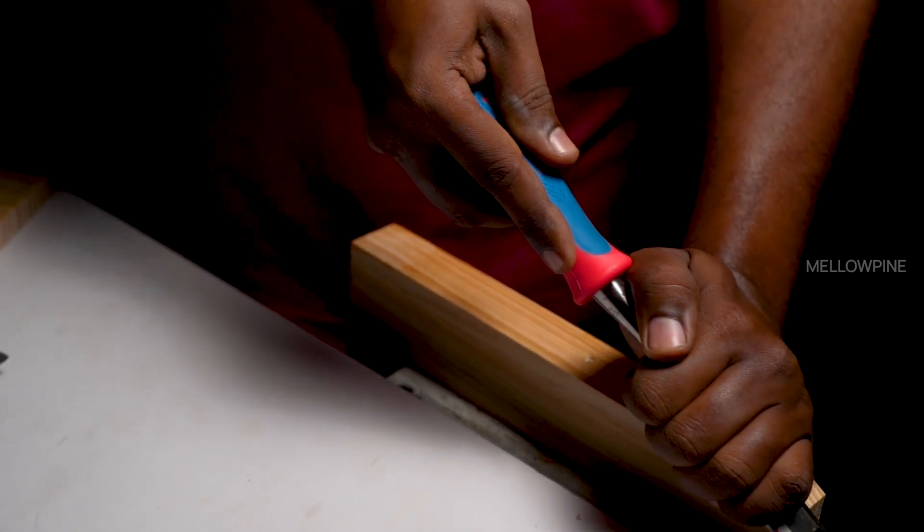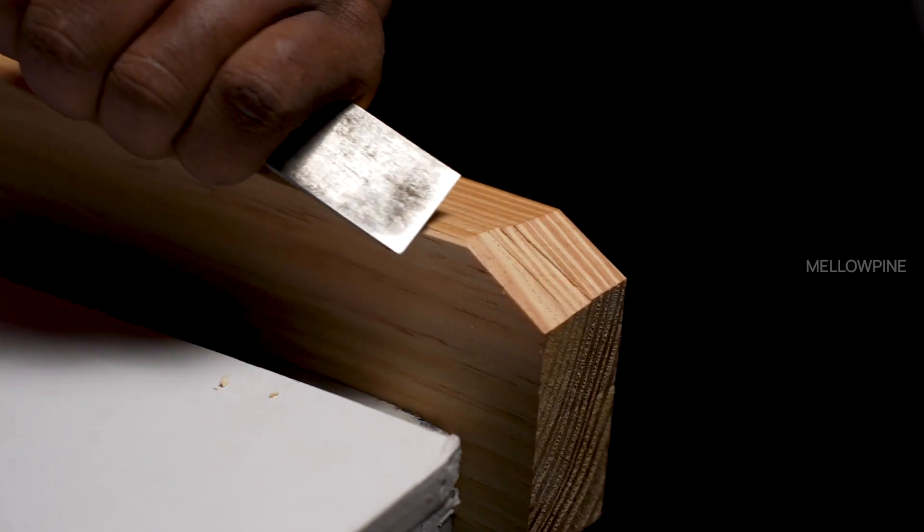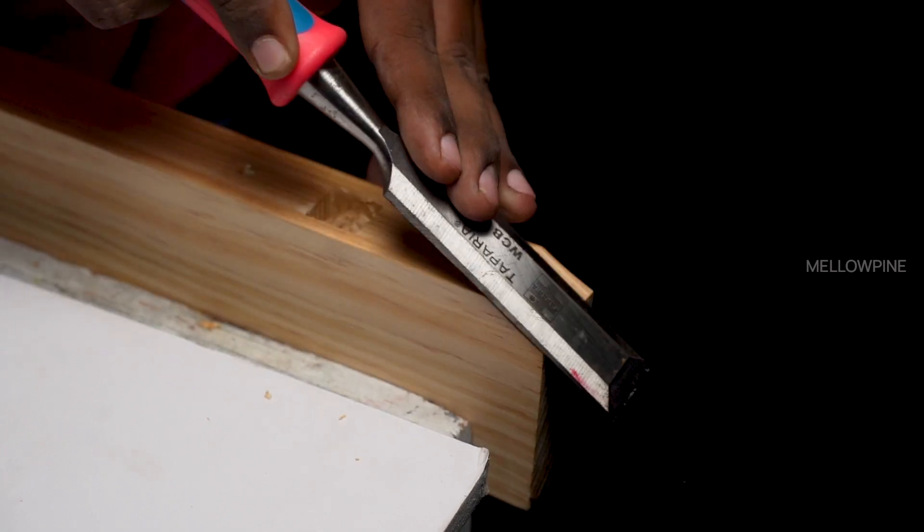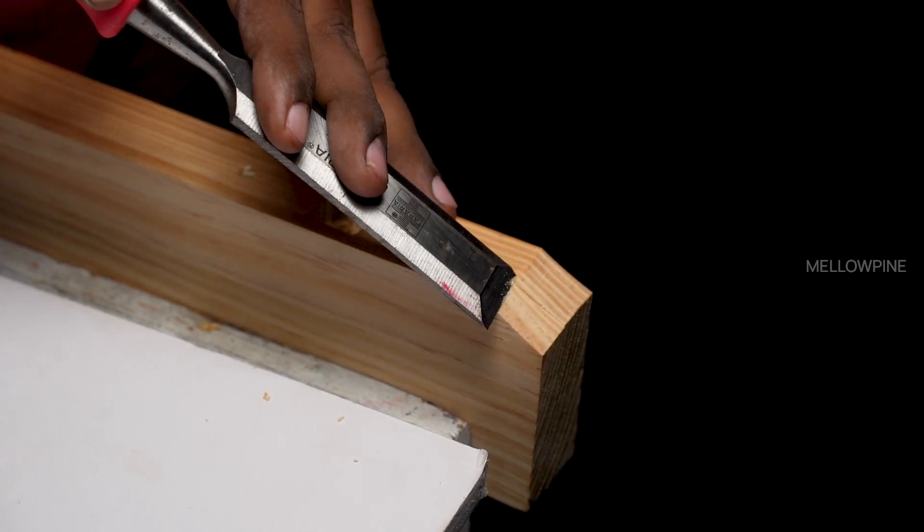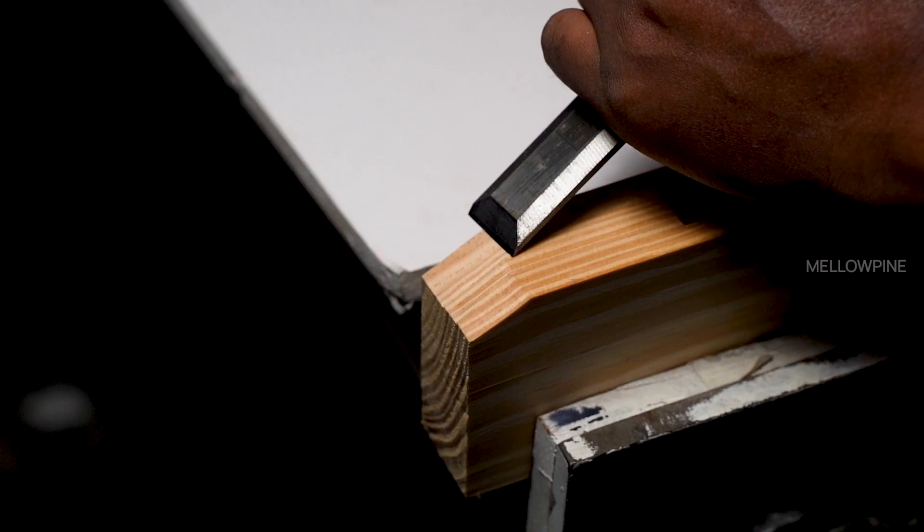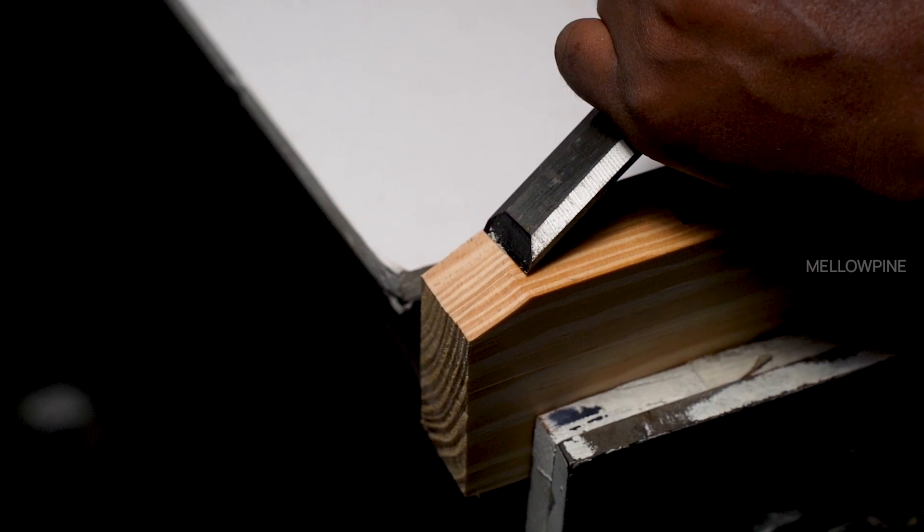When paring, focus on removing small shavings rather than large chunks of wood. This approach promotes greater control and precision. Remember to apply gentle and consistent pressure. Take your time, make gradual progress, and ensure the chisel remains parallel to the workpiece.